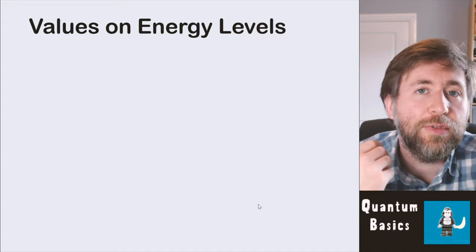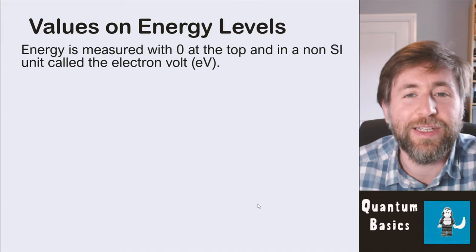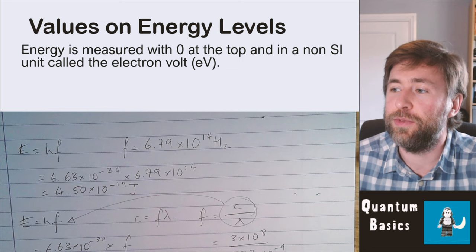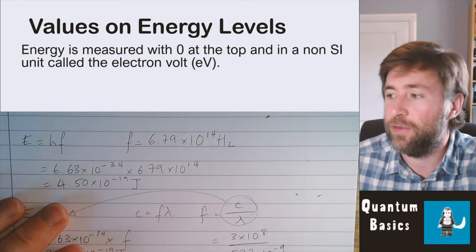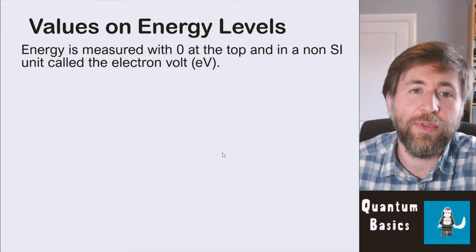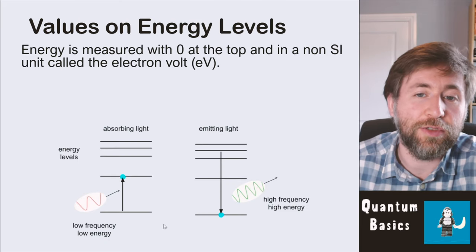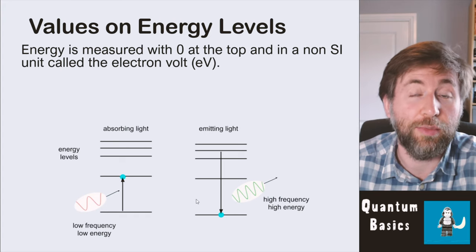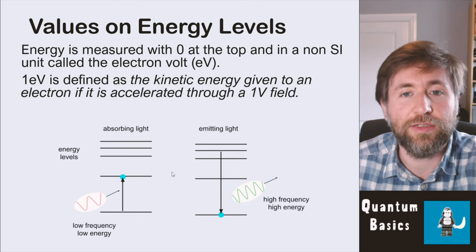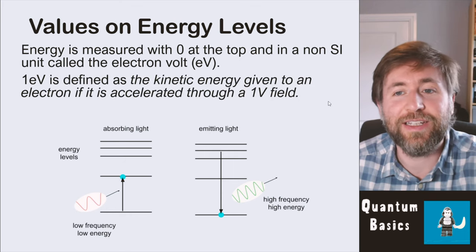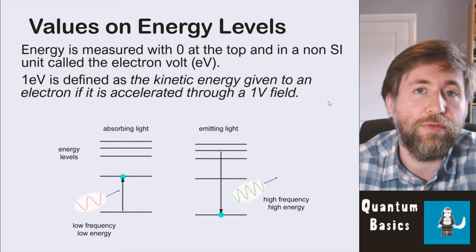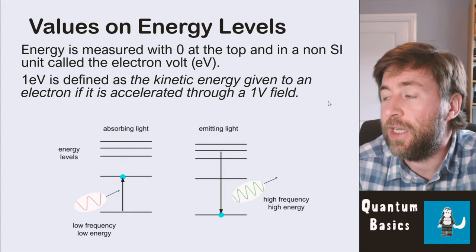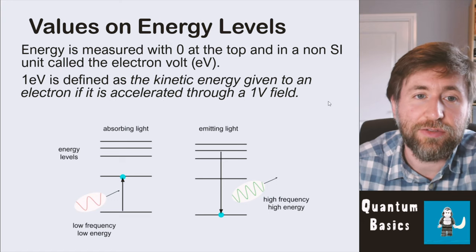The next new idea: we're dealing with really small values of energy when talking about individual electrons, so using joules is not sensible. Calculations with energy in joules give really small values. So we've come up with a non-SI unit — the electron volt — which gives us much more straightforward numbers. It's defined as the kinetic energy given to an electron if it's accelerated through a one-volt field. We aren't talking about particle acceleration yet, but that is the definition.